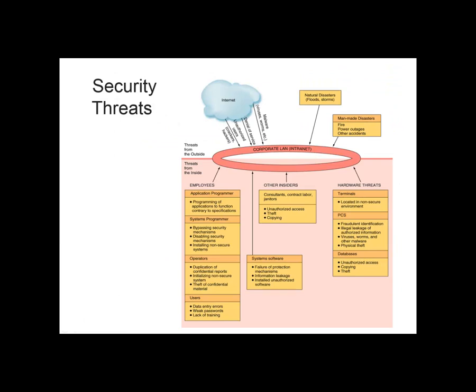The corporate plan can face threats from outside or inside the organization. For external threats, internet threats include viruses, malware, worms, spyware, and similar threats, as well as denial of service, unauthorized users, and hackers over the internet. Other external issues include natural disasters like floods, hurricanes, mudslides, and earthquakes — these are natural or God-made disasters that affect the organization's infrastructure.